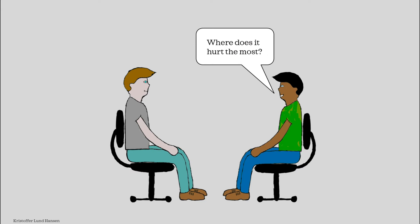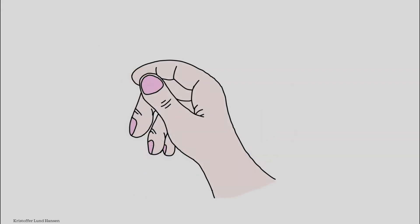A second important question would be: can you show me where it hurts the most? When a patient points to somewhere inside the red circle shown, then you suspect De Quervain's disease as part of your differential diagnosis. The pain can also radiate outside this area, typically up the forearm, but the most intense area of pain is on the radial side of the hand, around the base of the thumb.